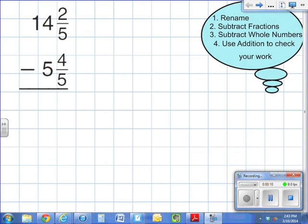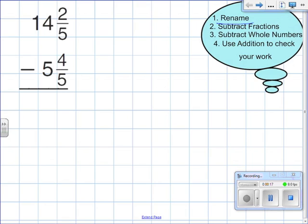The first one we have here is 14 and 2 fifths minus 5 and 4 fifths. So if we look at the numerators, I cannot subtract 4 from 2. So in this instance, because I cannot subtract 4 from 2, or in other words, 2 minus 4, I'm going to have to rename using that 14.